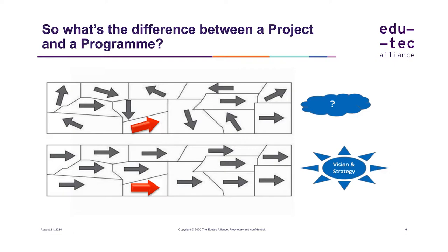If on the other hand you have a vision and a strategy for how to get there, then you have a context for aligning all of the projects — some of which may be running in parallel — giving you a smooth and efficient way of getting to your end goals. The project manager is responsible for running their individual project, while the program manager choreographs the overall portfolio and ensures that interdependencies are recognised and all projects are effectively coordinated.